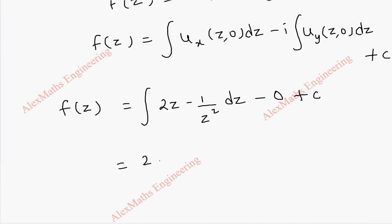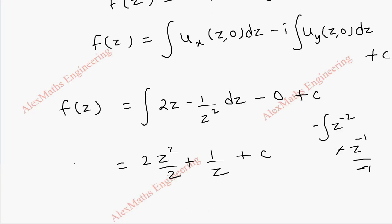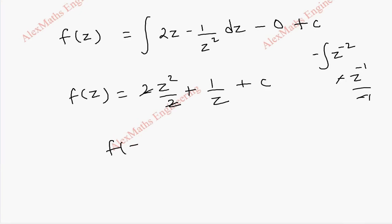We integrate: 2z integrates to z², and the integral of -1/z² — which is -z⁻² — integrates to z⁻¹/(-1) times (-1), giving +1/z. So f(z) = z² + 1/z + c.